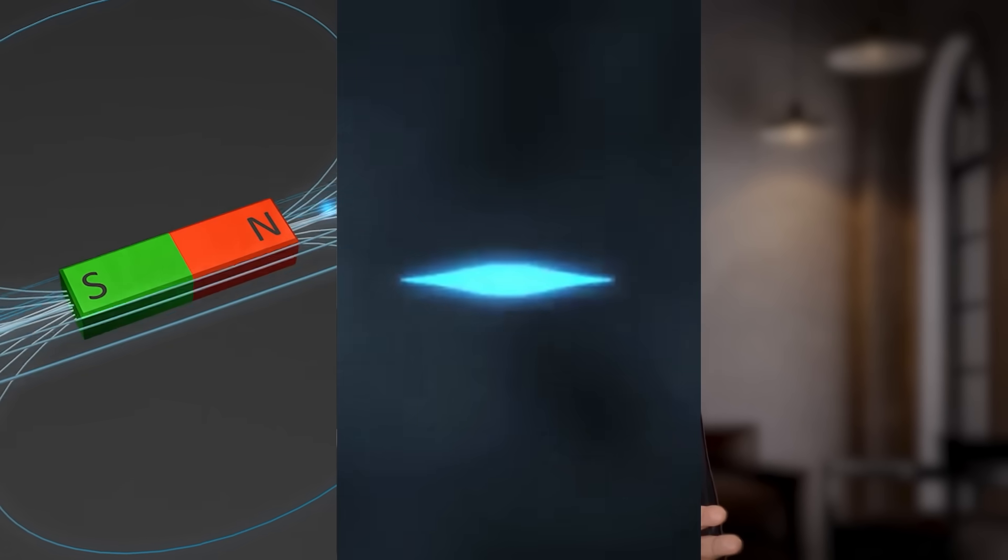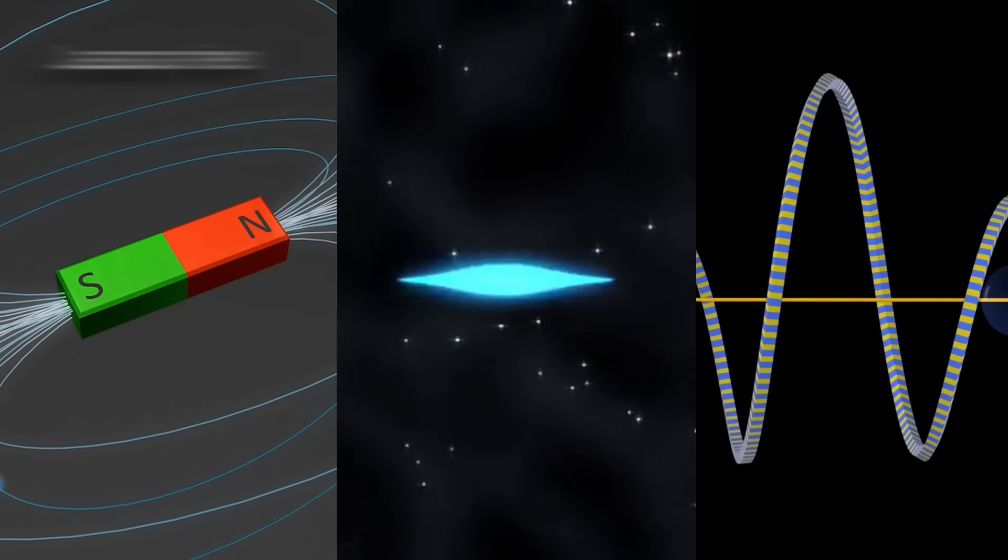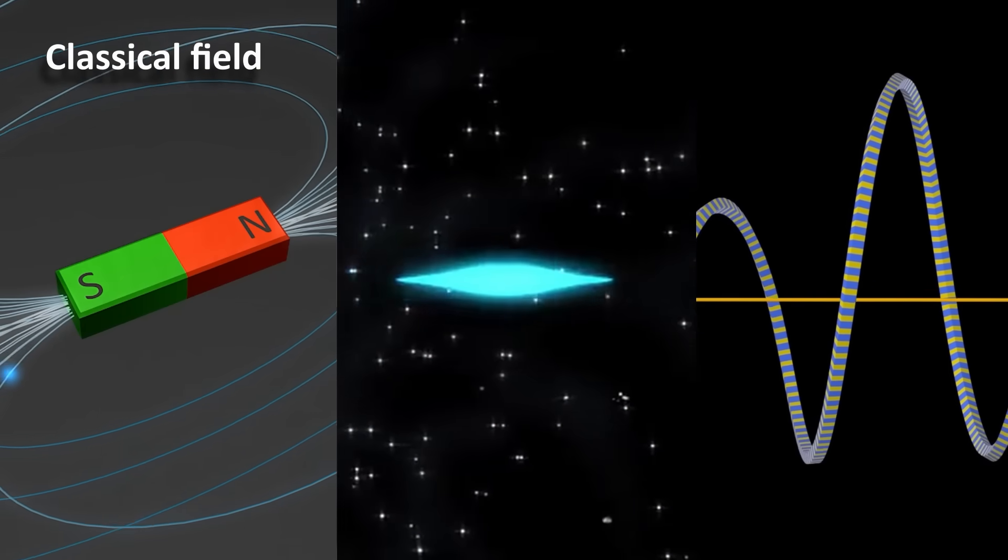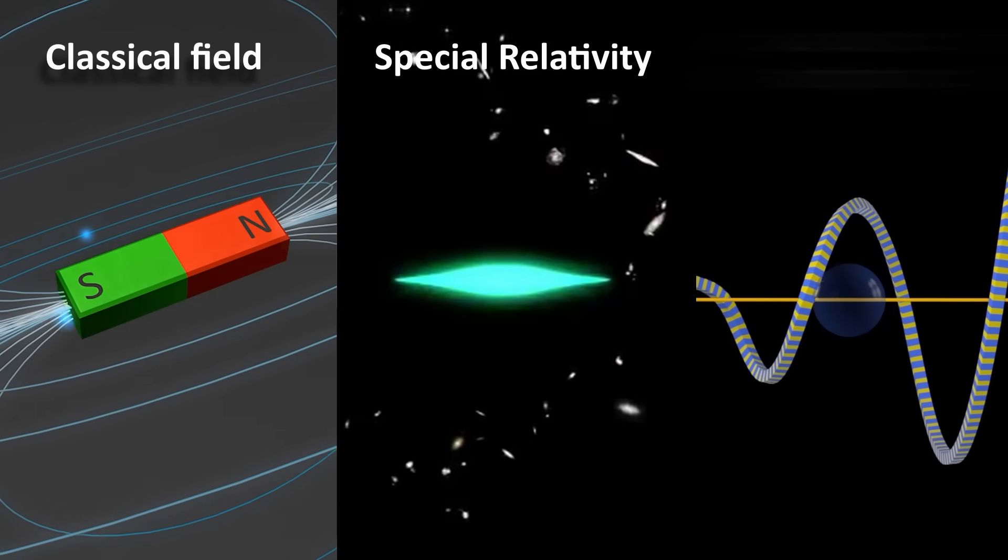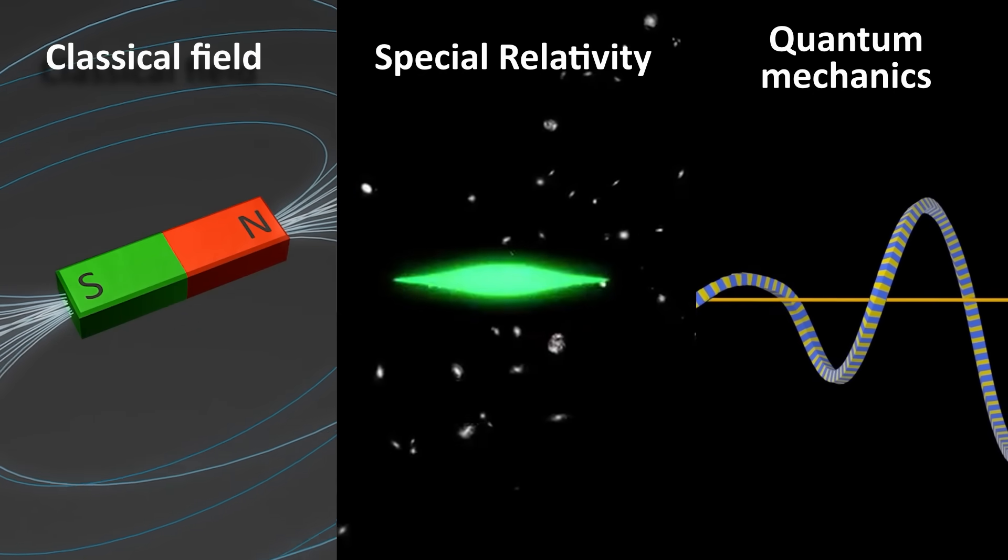This is where quantum field theory explains things that quantum mechanics cannot explain on its own. So what is quantum field theory? Well, it is a mathematical framework that combines classical field theory, a classical field would be like a magnetic field as described by James Clark Maxwell, special relativity, and quantum mechanics.